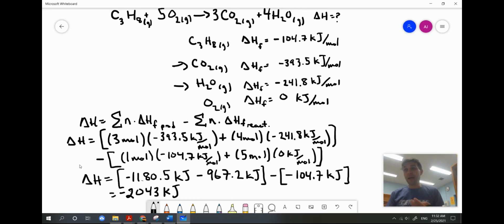So the heat of reaction, which is the heat of combustion for one mole of propane, is negative 2043 kilojoules.